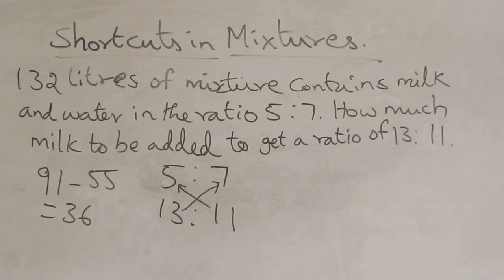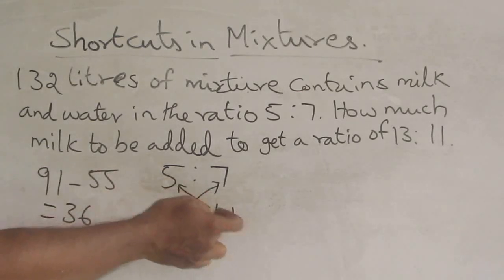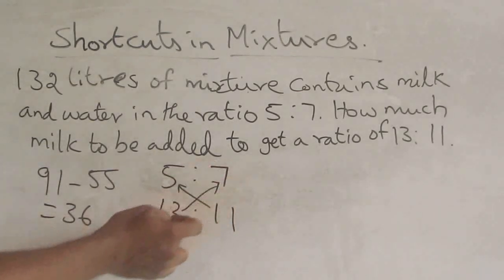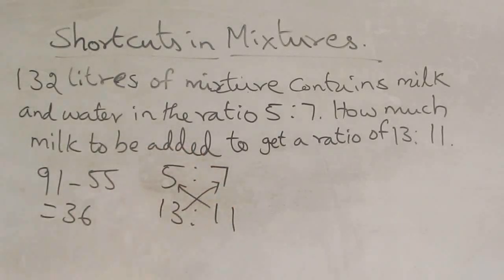It's very simple. If you think about it, it's very simple. This ratio method is just cross multiply.